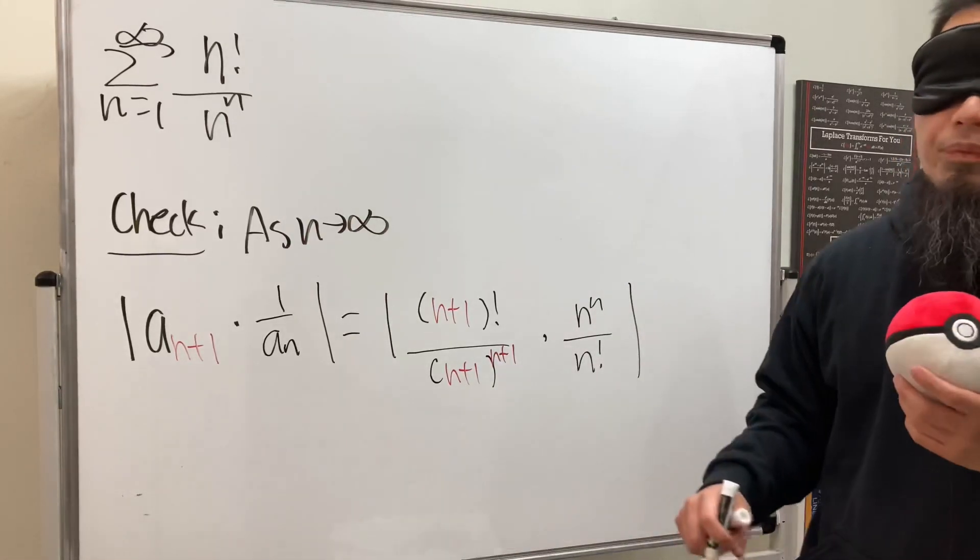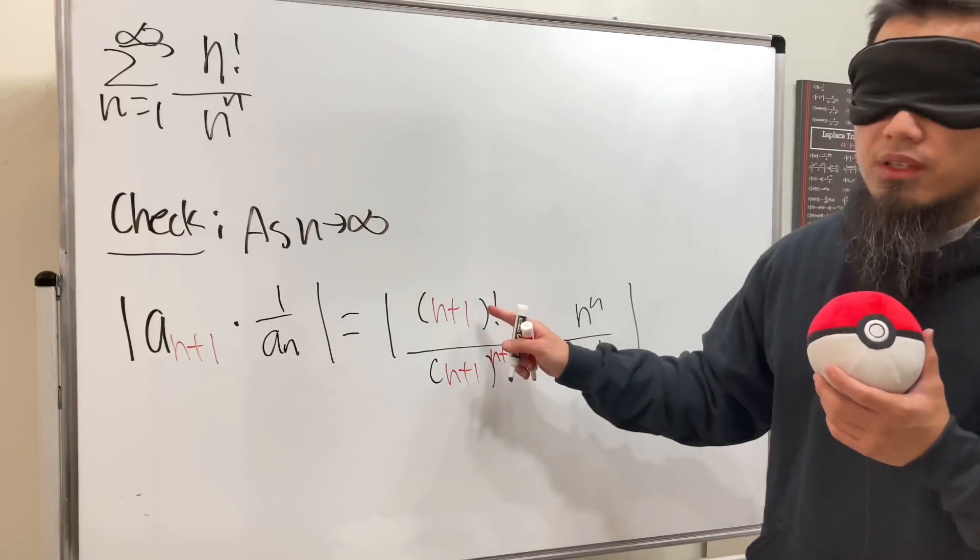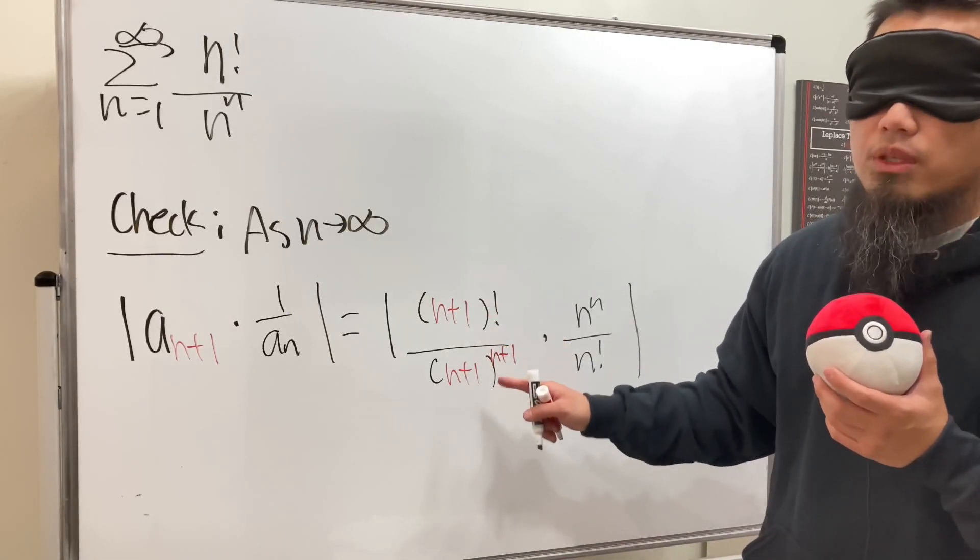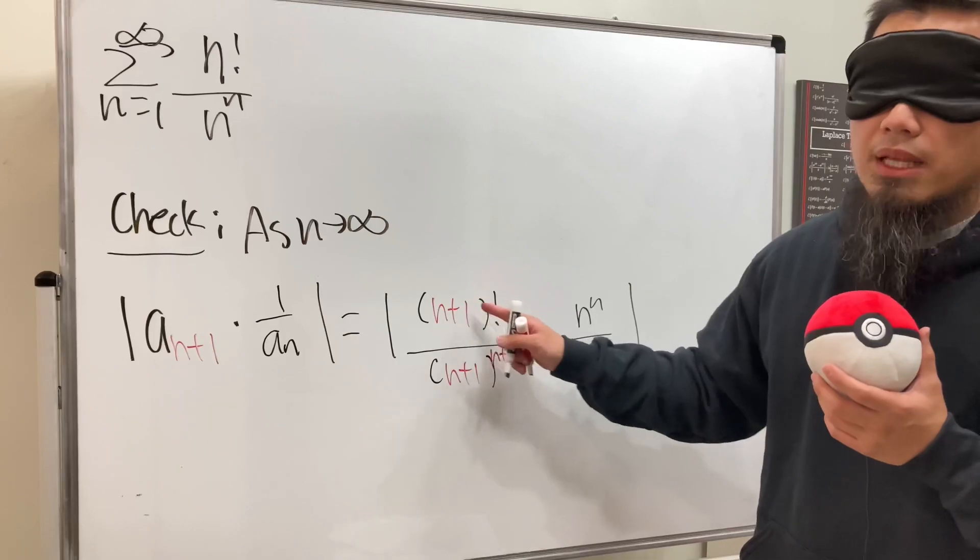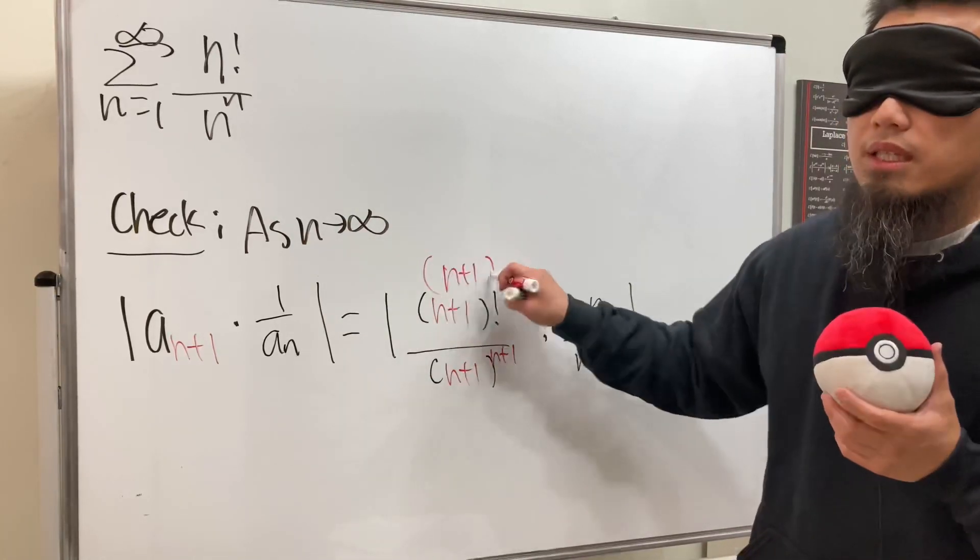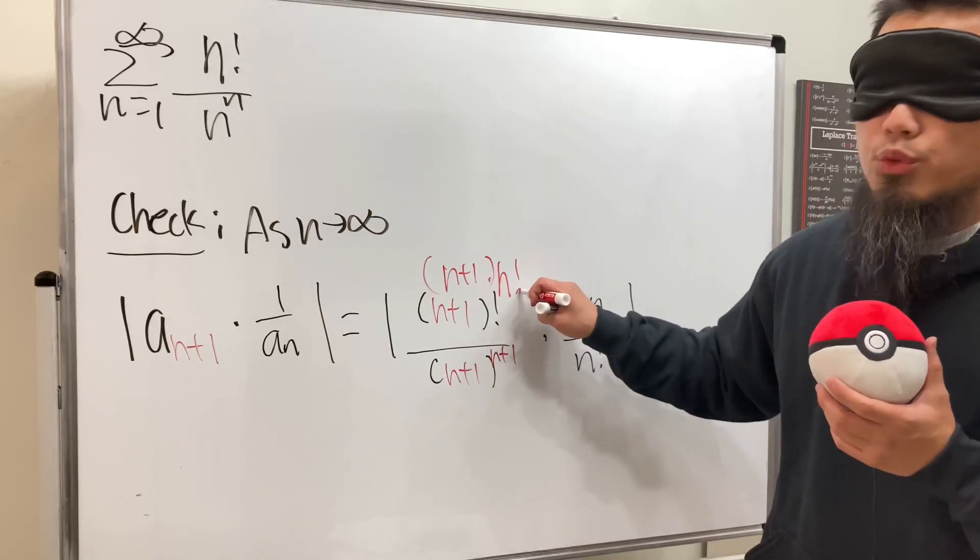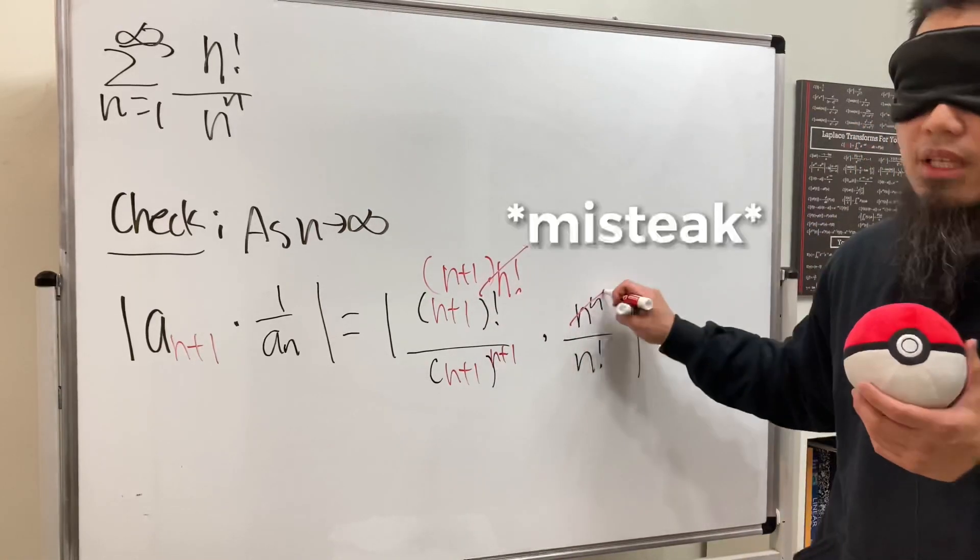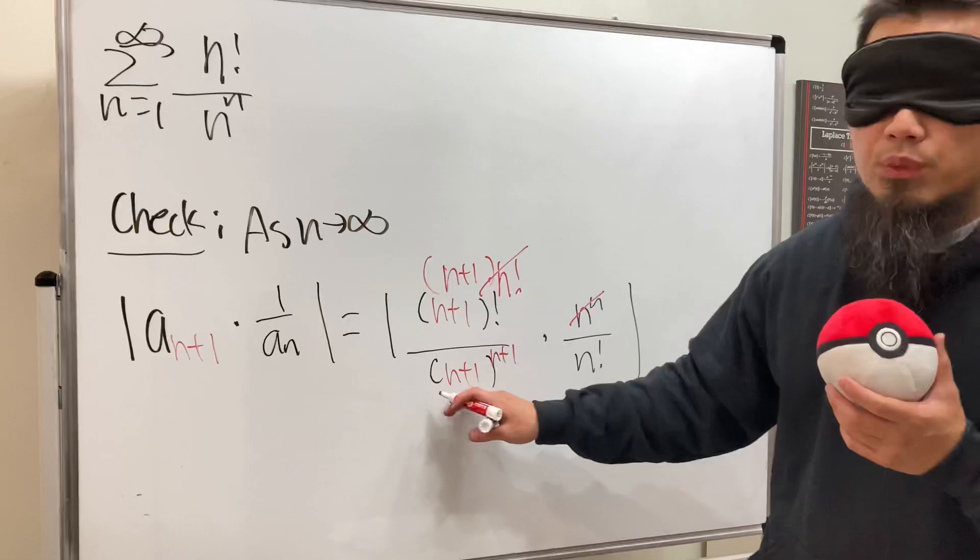That's good. Now, as you can see, we can break down the bigger factorial and also the bigger exponent. For the bigger factorial, (n+1) factorial, we get (n+1) times n factorial. And the n factorials cancel. Good.